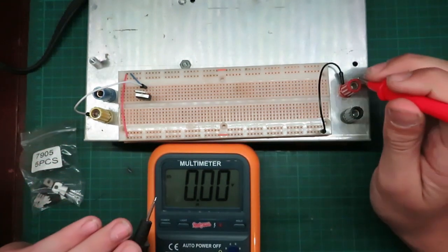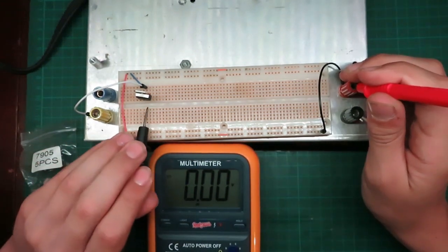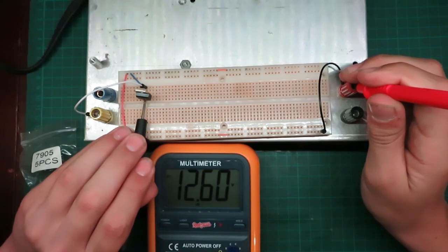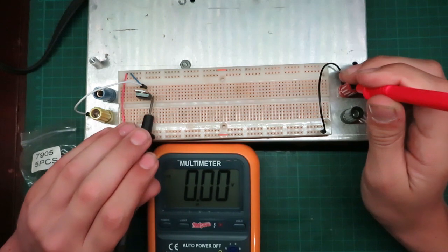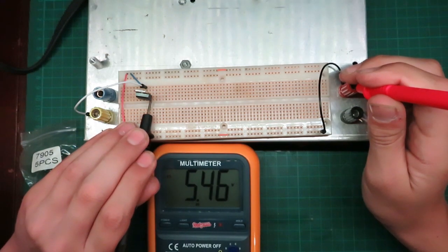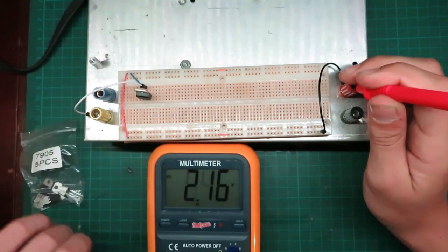We can measure our voltage input. Put the positive here. So the input is 12.60 volts. The output is 5.46 volts. This is a negative voltage regulator. Now we'll view the signal on the oscilloscope.